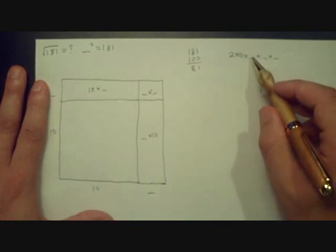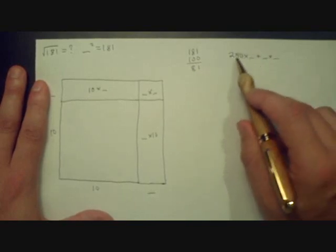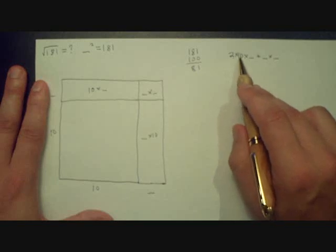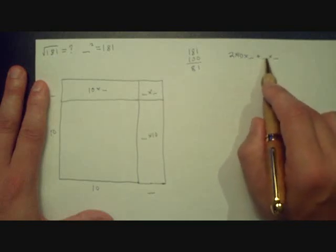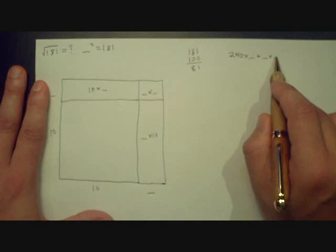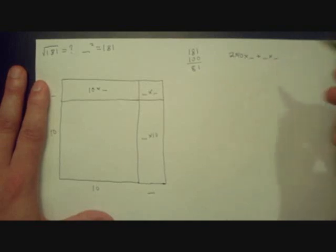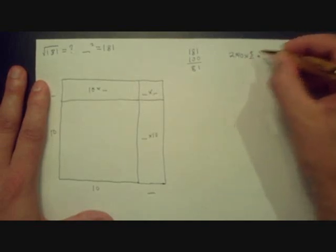And so, well, if I put a 4 in for the blanks, then I end up with 2 times 10 times 4, 80, plus 4 times 4, 16. That's 96 too high, and so I'll just go a little shy of that and put a 3 in here.